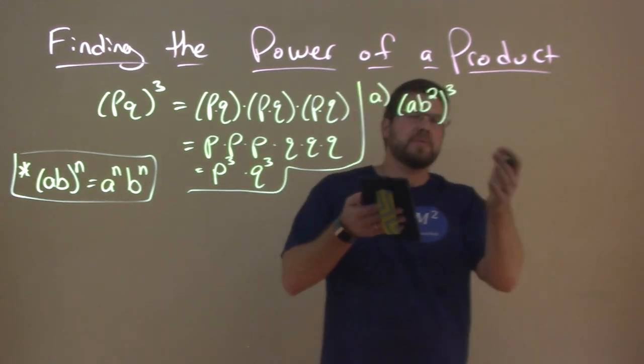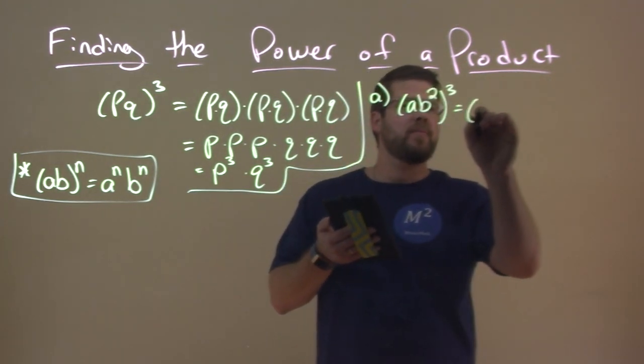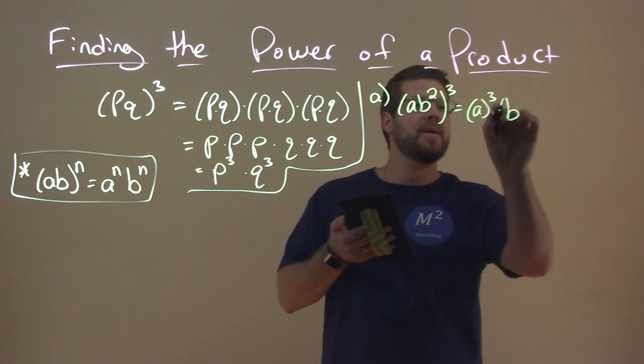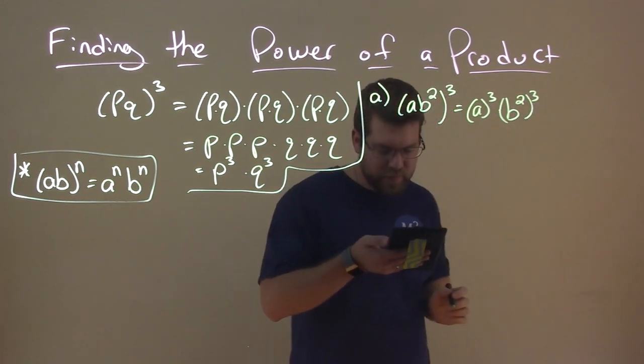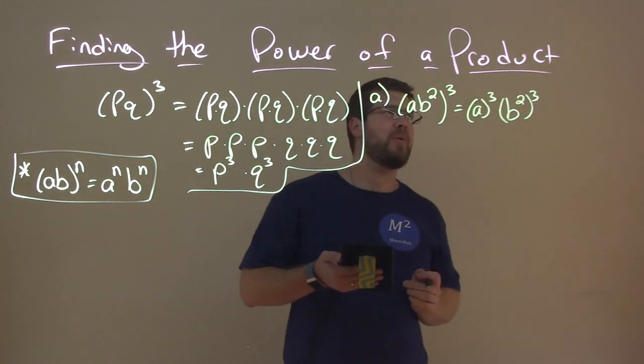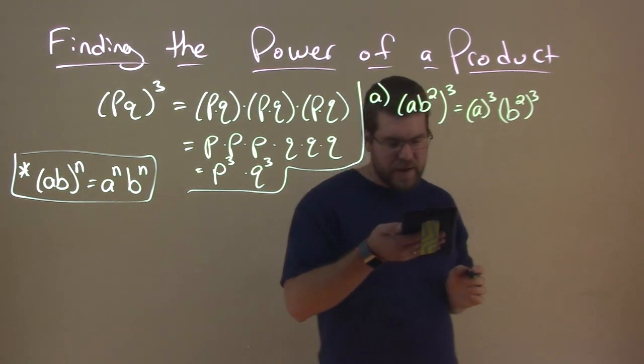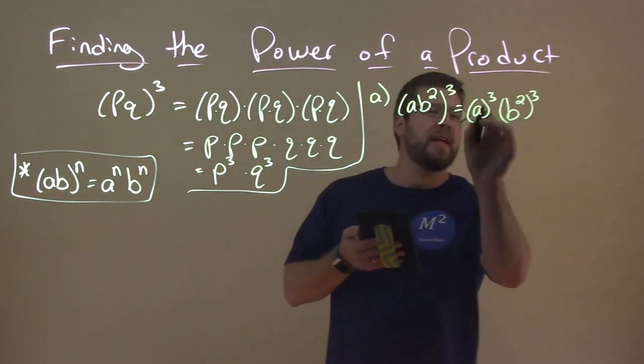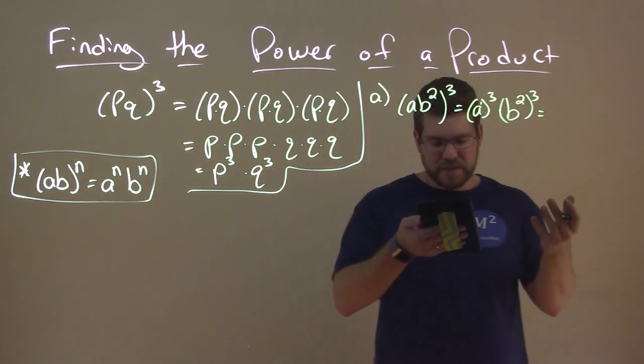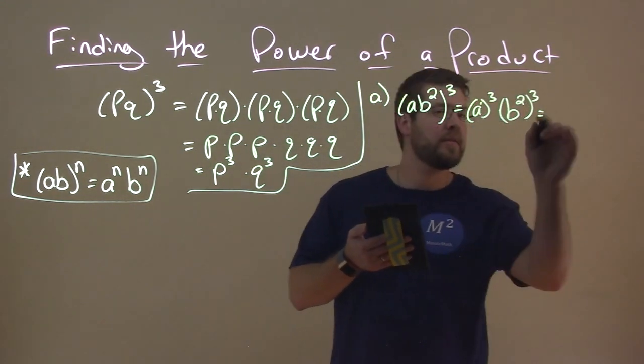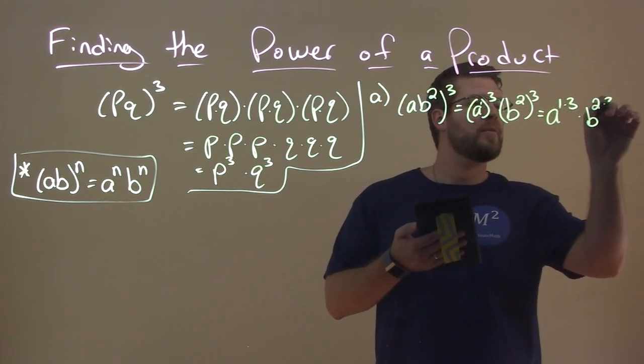We have now, that's a to the third power times b to the second power to the third power. Now there's multiplication going on right there, and we also know that that's a to the first power. Right here, that little a to the first power. So if we see that, that's really, remember our rules here, we multiply the exponents. a to the 1 times 3 times b to the 2 times 3.